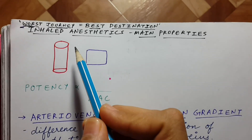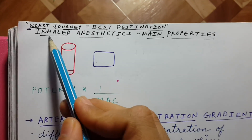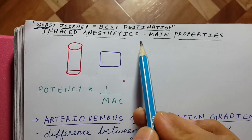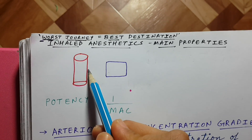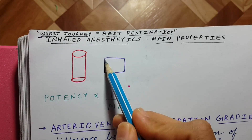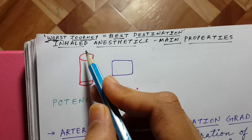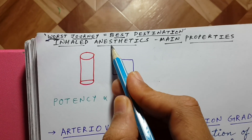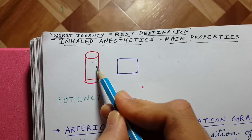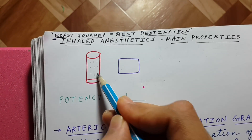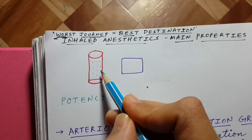Hello everyone, today we will discuss the main properties of inhaled anesthetics. Let's assume this is a blood vessel and this is a tissue or a cell. The solubility of the anesthetic in the blood will determine the rate of induction of its action.